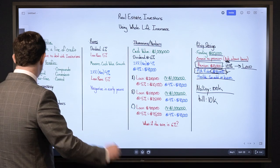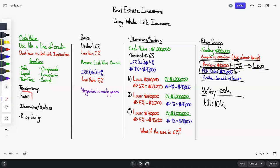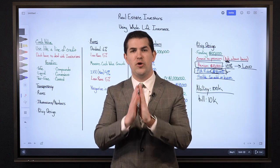When it comes to real estate investors using whole life insurance, transparency is key. First, make sure you have transparency around the rates — the dividend rate is not what your policy is actually growing by, and the loan rate is what you're paying the insurance company. Second, always look at illustrations and numbers — look at different scenarios showing the exact dollar amount you're paying in loan interest versus what you're receiving from the insurance company. And lastly — really this should come first — make sure the policy is designed in a very flexible manner.